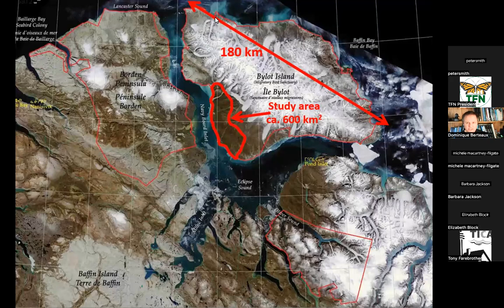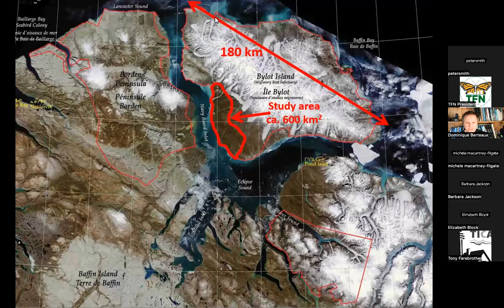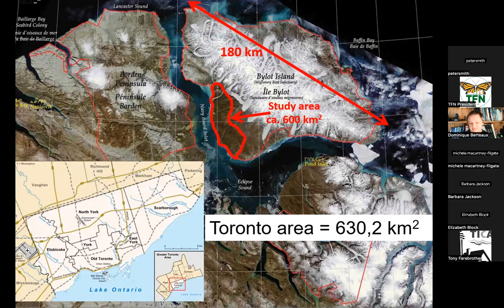Bylot Island is a large island, about 180 kilometers long. It's mostly covered in mountains and glaciers, but there's an area to the south with no ice, where there are some plants and wildlife. The study area is about the size of the Toronto area. However, on Bylot there are no roads, no houses, no airport — just tundra and some wildlife.